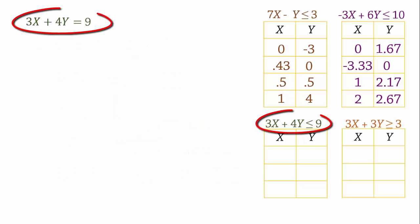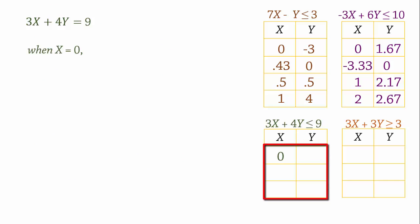For constraint 3, we have the line 3x plus 4y equals 9. When x equals 0, y equals 2.25. And when y equals 0, x equals 3. Let's try one more point. When x equals 1, y equals 1.5.